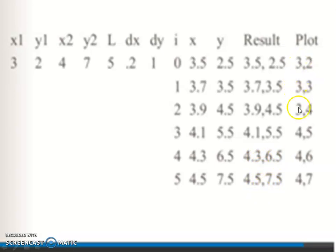Truncated values are 3,2; 3,3; 3,4; 4,5; 4,6; and 4,7. We are plotting using these coordinates. This is the DDA algorithm. Thank you for watching.